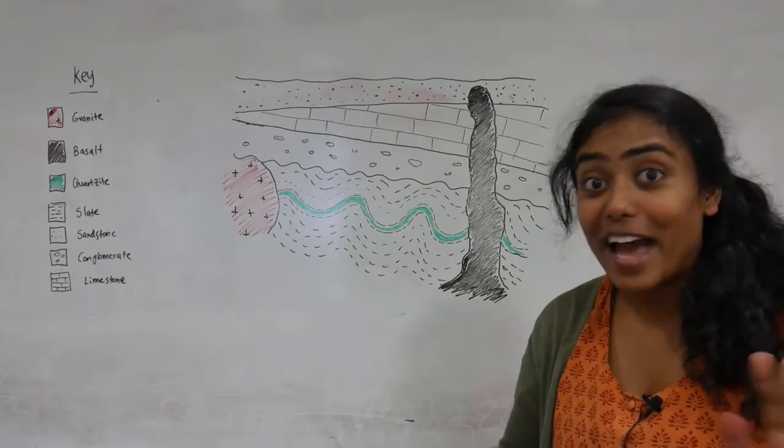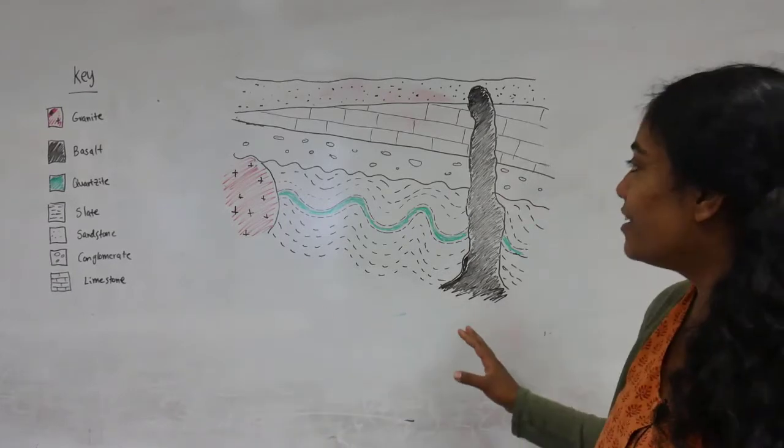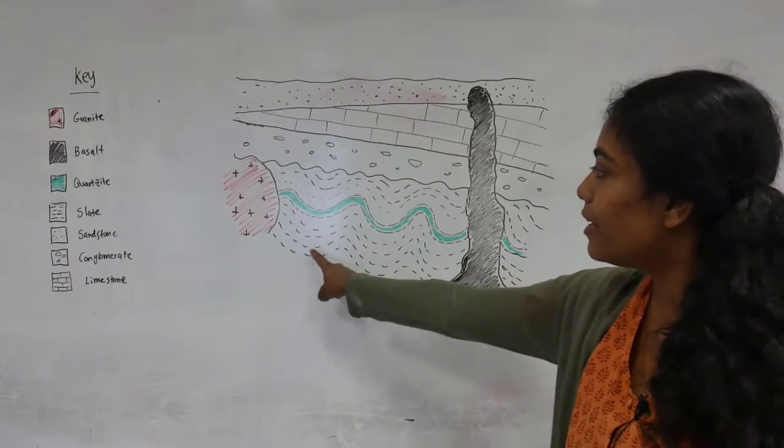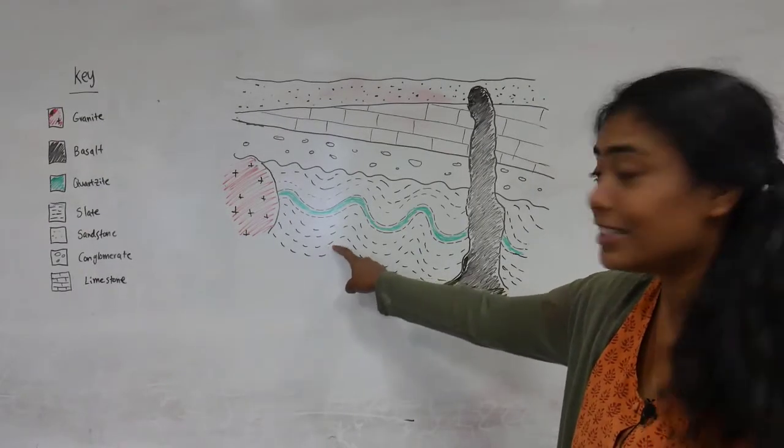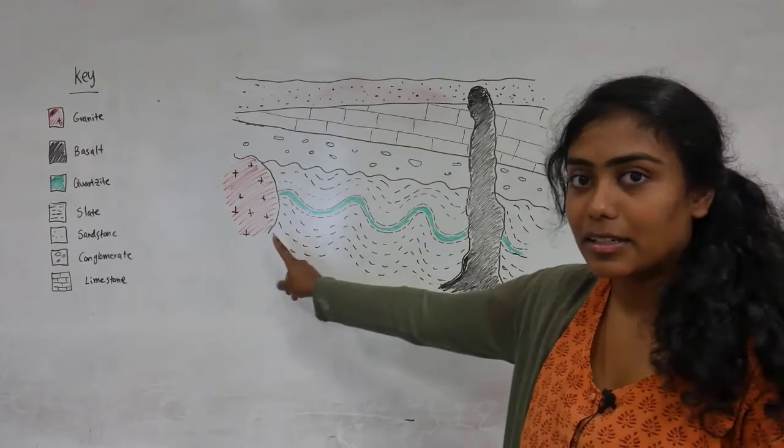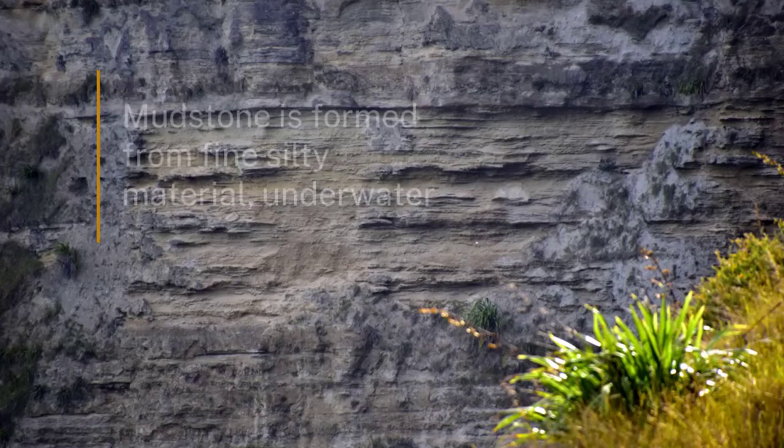I'll now go through the answer of what happened here. So basically down here we have a slate. This would have started off as something like a mudstone deposited underwater.